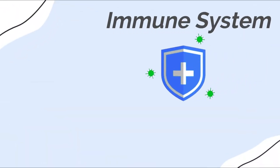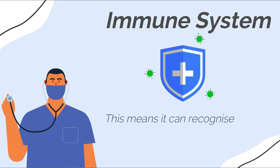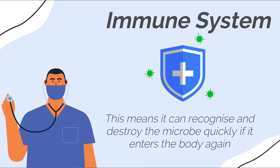The immune system keeps a record of every microbe it has ever defeated. This means it can recognize and destroy the microbe quickly if it enters the body again, before it can multiply and make you feel sick.